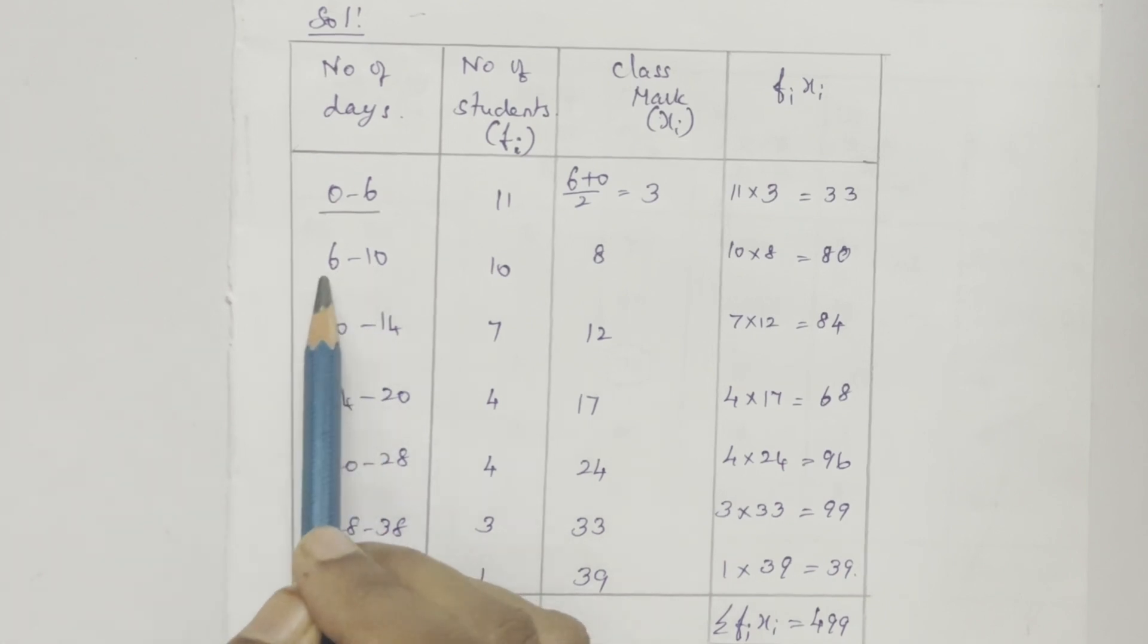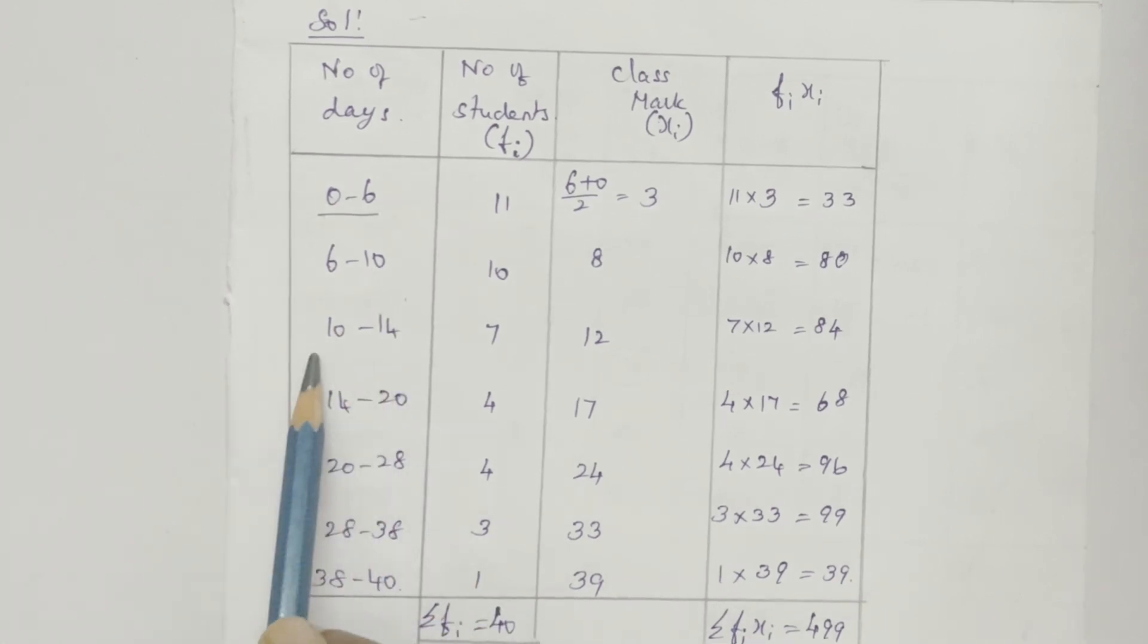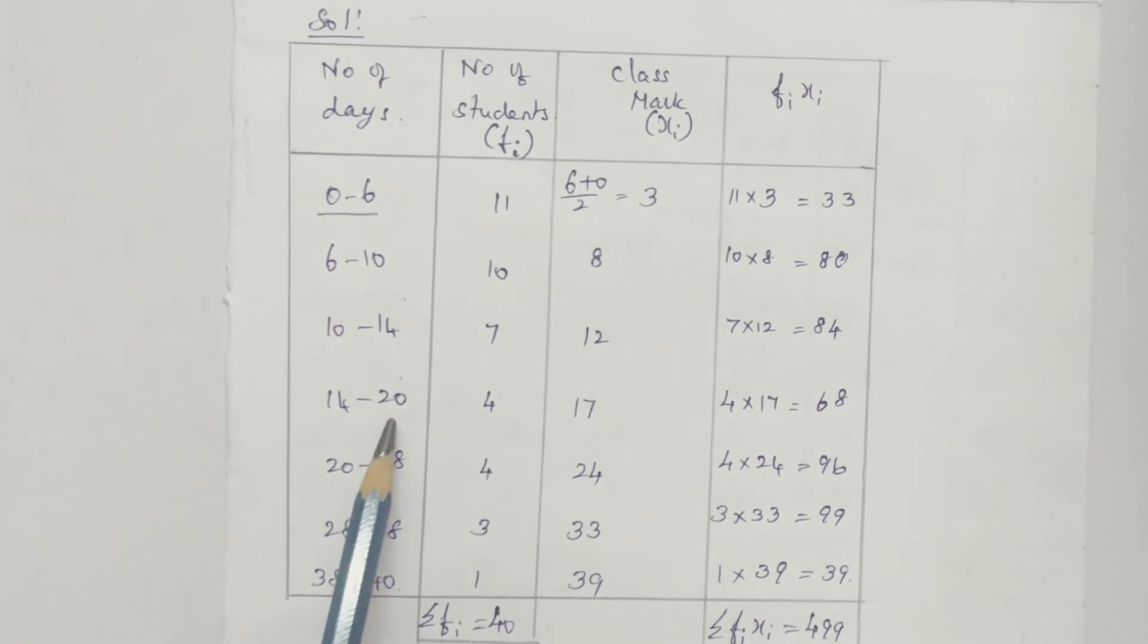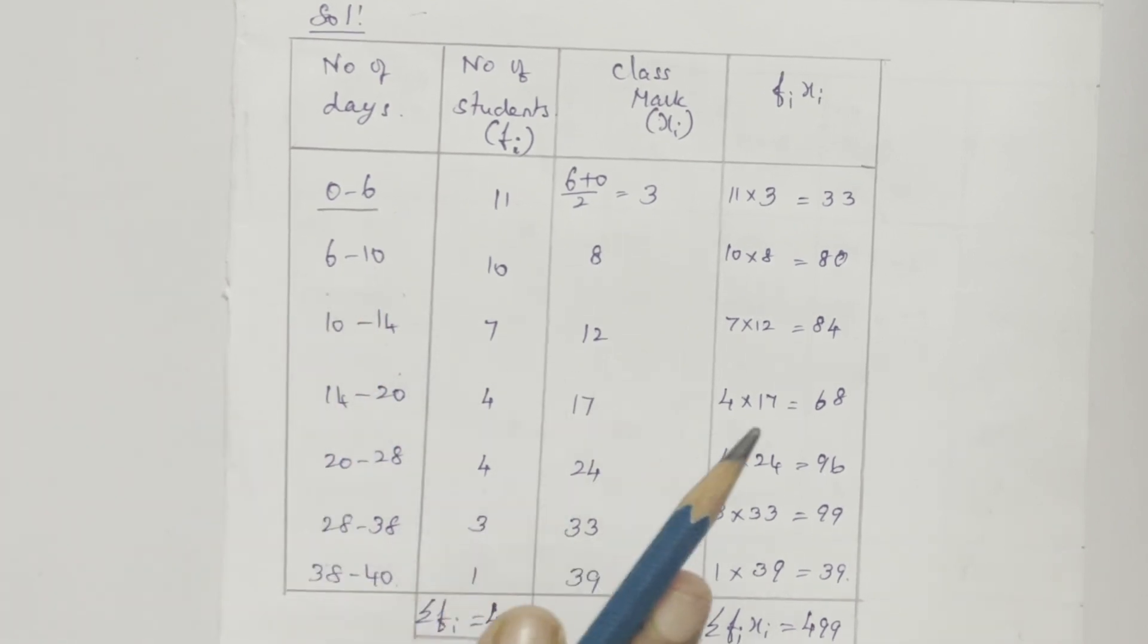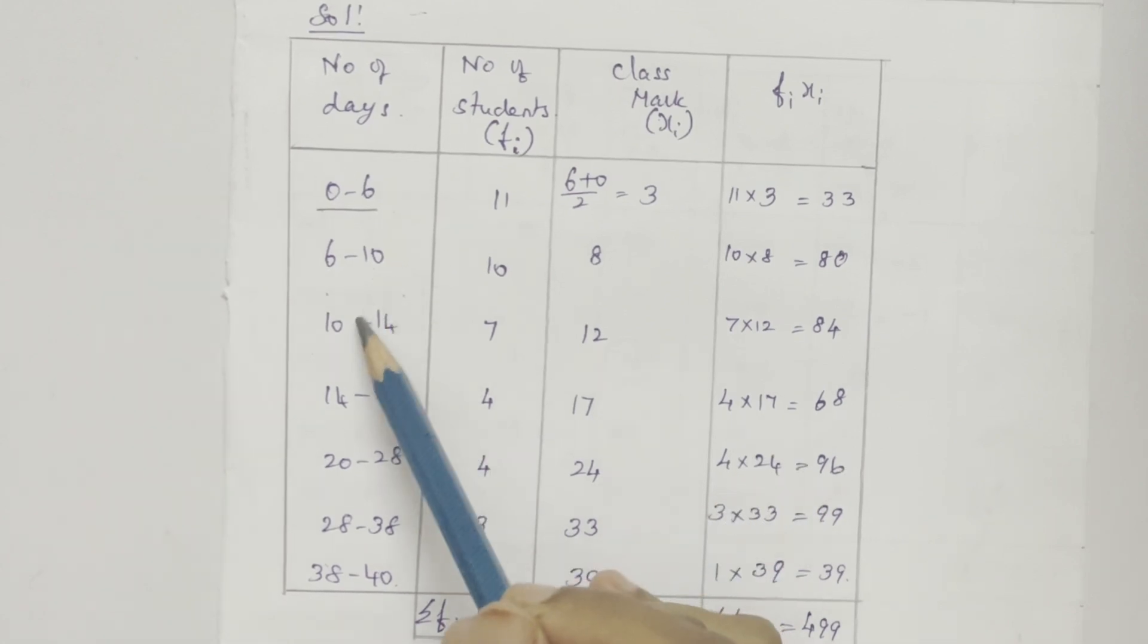Here 10 minus 6 is 4. Here 14 minus 10 is 4. 20 minus 14 is 6. So the class size is different. That is, the difference between the upper limit and lower limit is different. Okay, now let us find the class mark.